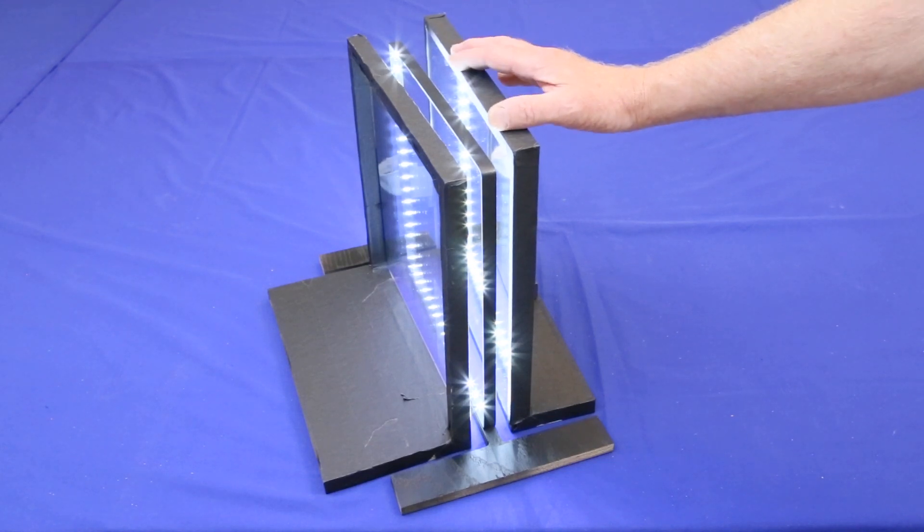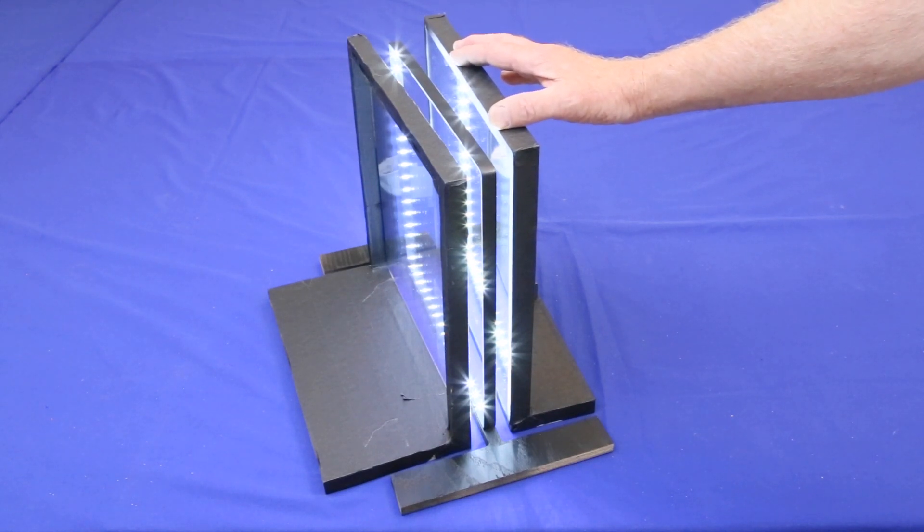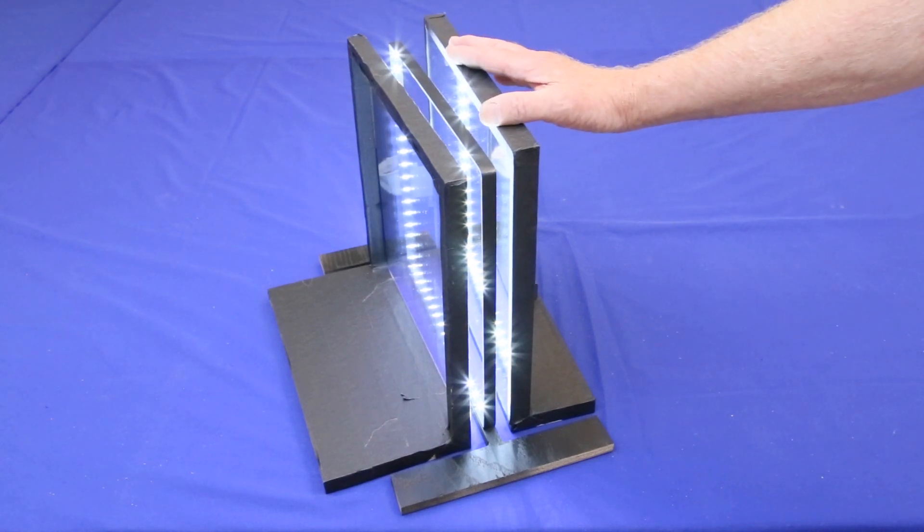Specifically, first surface mirrors, so that the reflections don't have to pass through a layer of glass before reflecting. This causes secondary reflections and faster dimming of the images. The problem with this is that such mirrors are hard to find and extremely expensive.